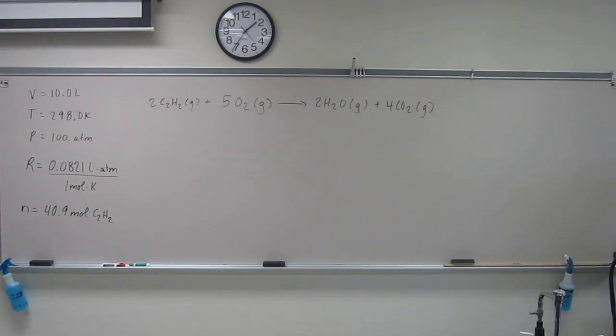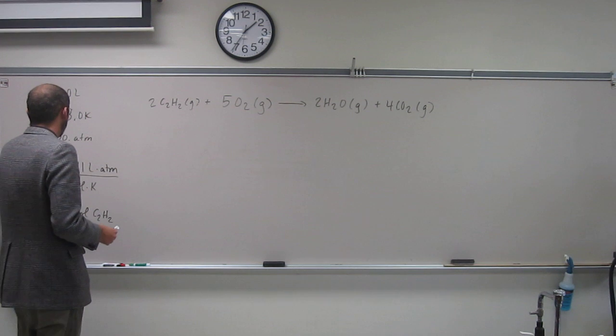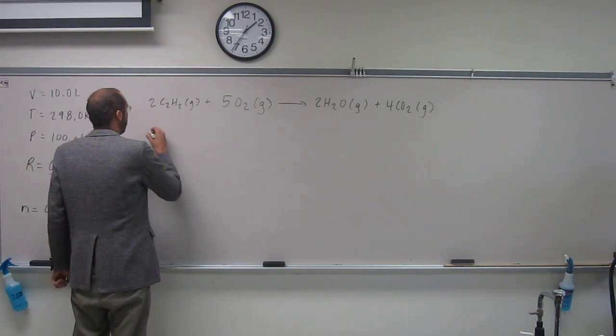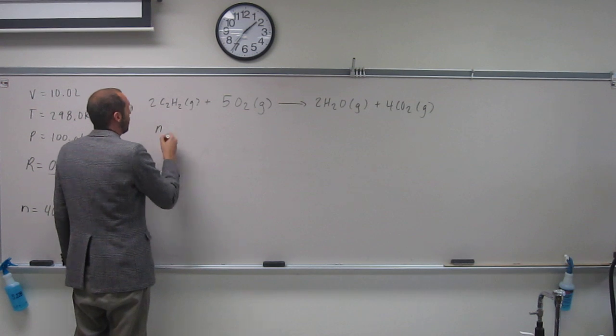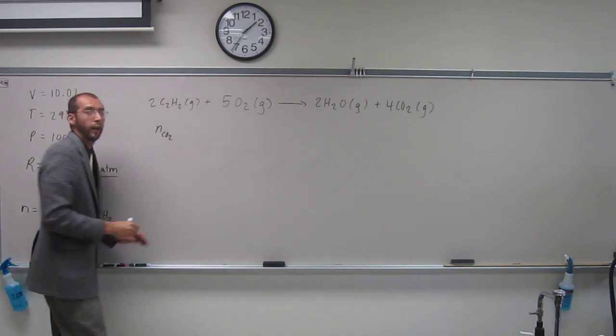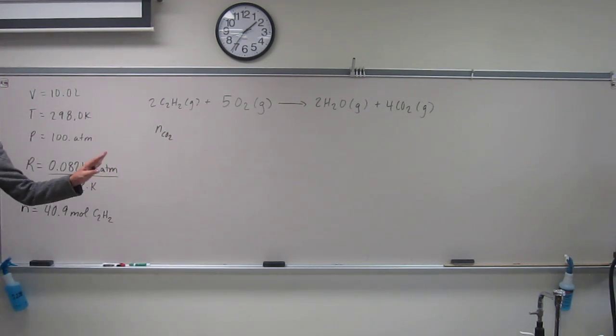If it would have said the mass, then we would have had to convert that number of moles to something like grams or something like that. In other words, number of moles of acetylene we have is 40.9, but we're looking for the number of moles of carbon dioxide. Does everybody understand what I've done here?